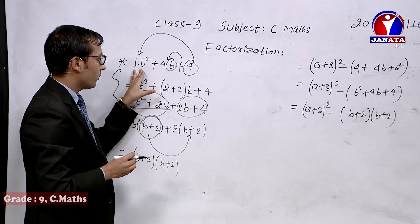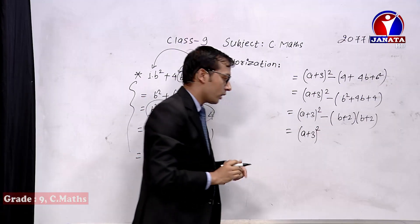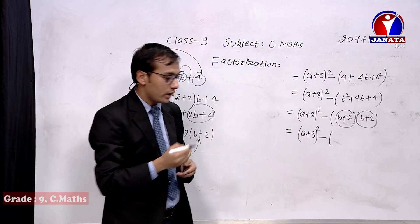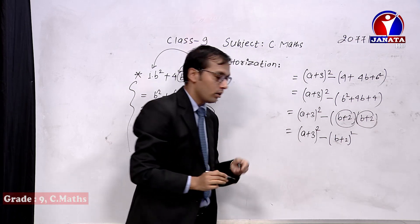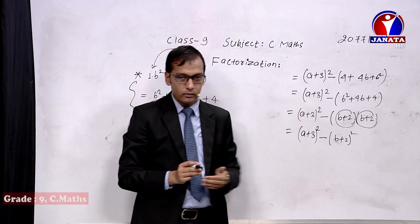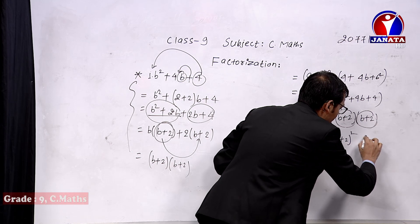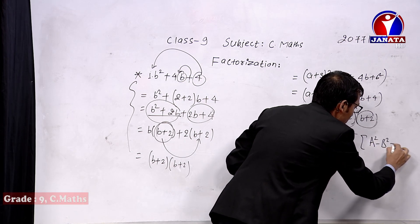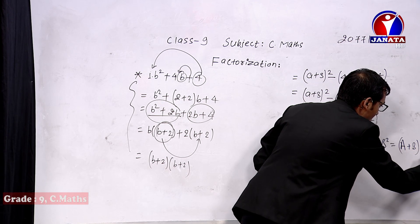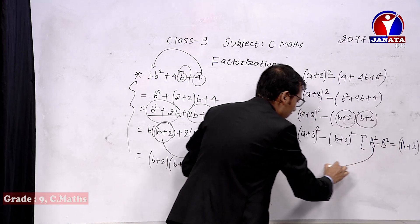So b² + 4b + 4 = (b+2)². Substituting back, we have (a+3)² − (b+2)², which is now in the a²−b² form, where a = (a+3) and b = (b+2). The factors of a²−b² are (a+b)(a−b).